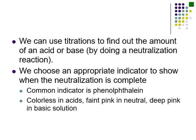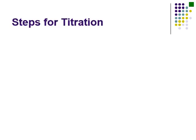Phenolphthalein is actually a very pretty chemical. It's colorless in acids, faint pink when it's neutral, and deep pink — almost purple — in basic solutions. When doing a neutralization with phenolphthalein, your goal is to get the faintest pink possible. You keep adding your base to the acid, neutralizing, until you see just the faintest pink.